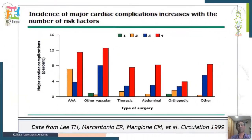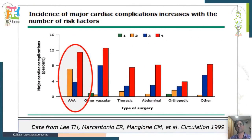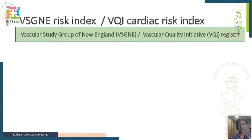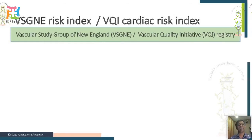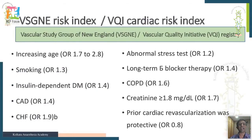The RCRI works across orthopedic, abdominal, thoracic, and other vascular surgeries, but not for major vascular surgery like abdominal aortic aneurysm. For vascular surgeries, the VSGNE or VQI cardiac risk index should be used, which adds increased age, smoking, abnormal stress testing, long-term beta blocker therapy, and COPD to the standard RCRI components.